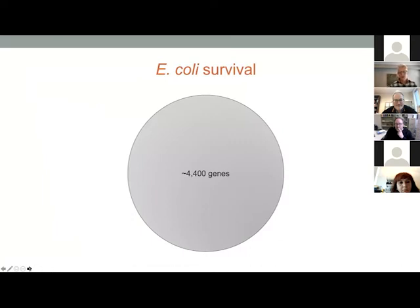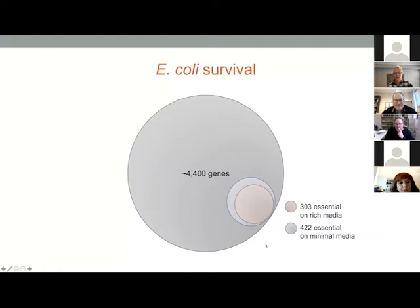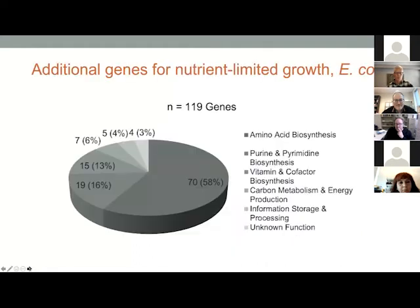E. coli has about 4,000 genes that are dispensable for growth on typical microbiological media — those are rich media conditions like MHB and LB, which are rich in amino acids and other nutrients. If we ask which genes are essential for growth on rich media, we come up with a list of 303. If instead we ask those bacteria to grow on minimal media — a nutrient-limited media containing only glucose or ammonium chloride — we get about 119 additional genes that are important. Those 119 genes are in very predictable areas of metabolism: almost two-thirds are involved in amino acid biosynthesis, another big collection in purine and pyrimidine synthesis, and still more in vitamin and cofactor synthesis.